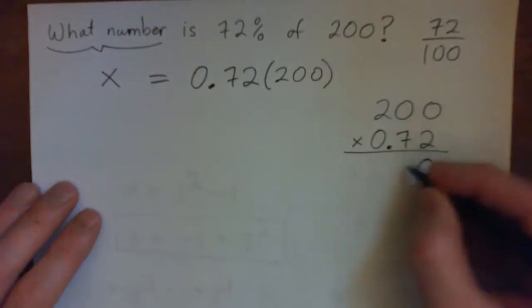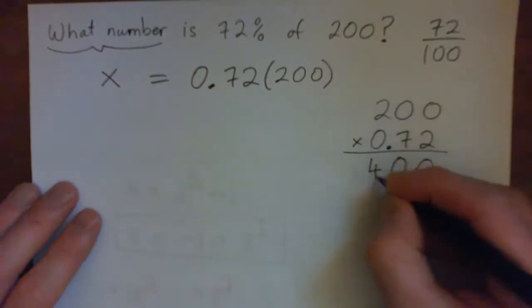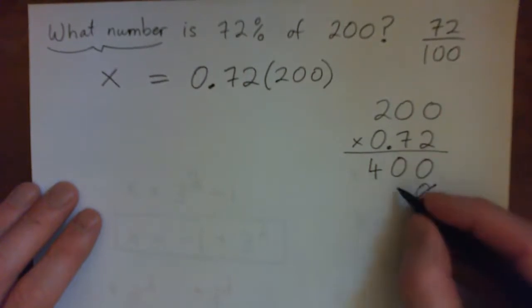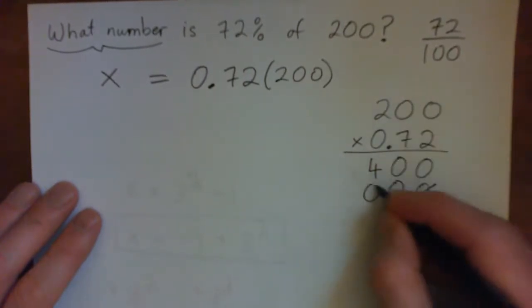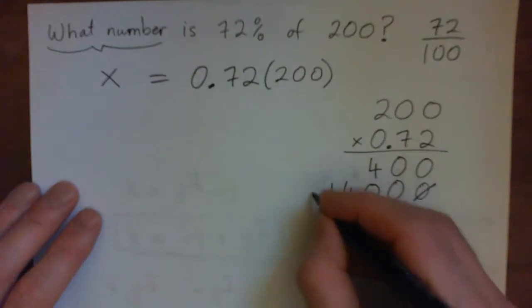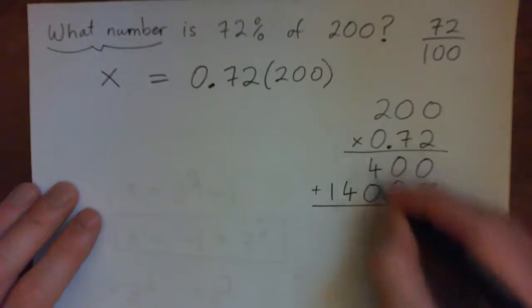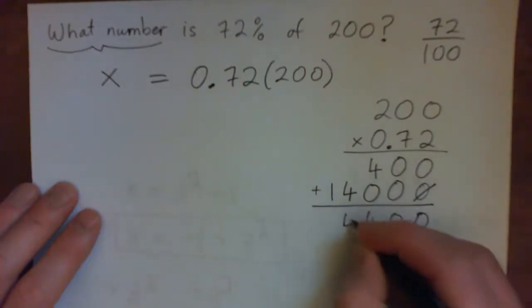2 times 0 is 0. 2 times 0 is 0. 2 times 2 is 4. Put down a 0 and multiply by 7. 7 times 0 is 0. 7 zeros is 0. 7 twos is 14. Now add these numbers. 0, 0, 4, 4, 1.